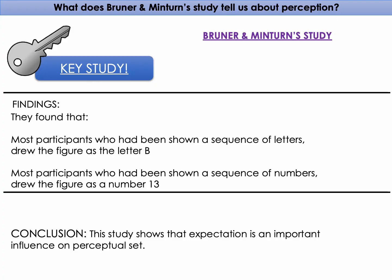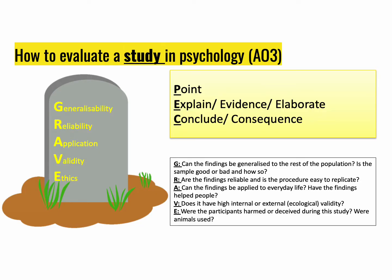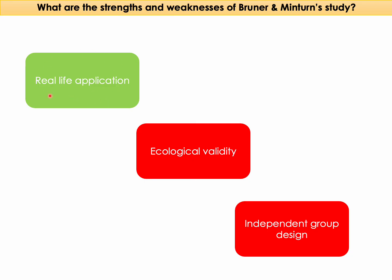Moving on to evaluate Bruner and Minturn's study — a quick reminder that we evaluate in psychology using GRAVE. Three evaluation prompts to consider: Is there any potential real-life application as a strength? Are there issues with ecological validity? And what about the fact that an independent group design was used? Pause the video now and think about how you could elaborate each of these into a point, evidence, conclusion writing frame.